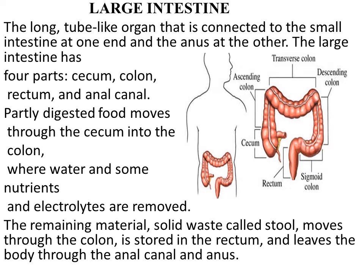To summarize: the large intestine is a long tube connected to the small intestine and to the anus. It has four parts — cecum, colon, rectum, and anus. The main function is to remove excess water, electrolytes, and nutrients from food and make it solid waste, which travels through the colon, is deposited in the rectum, and finally leaves the body through the anus.